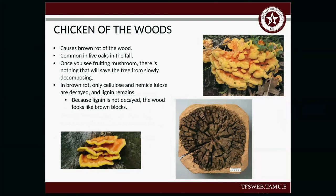Chicken of the woods — I've heard it's edible and tastes like chicken, but I'm not going to try it. It causes brown rot of the wood and is very common in live oaks in the fall. Once you see the mushroom, there's really nothing you can do to save the tree. Brown rot means only the cellulose and hemicellulose are decayed, but the lignin remains — the lignin is what causes that blocky, cube-like pattern you see in the photo.